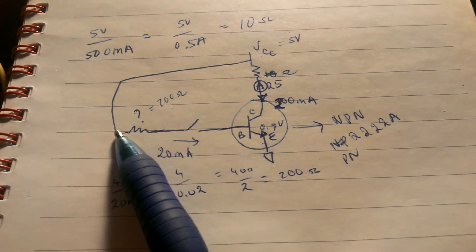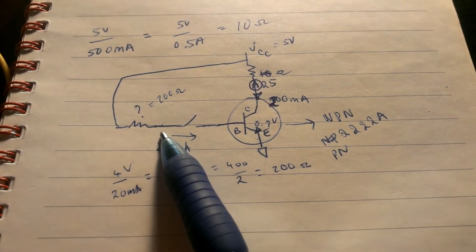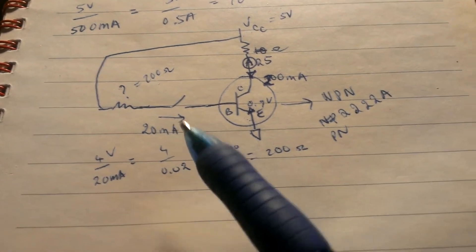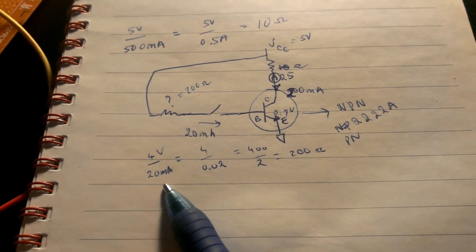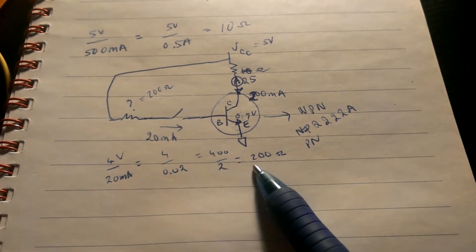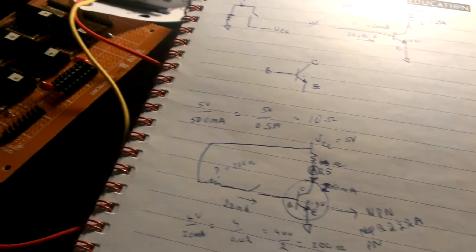So the voltage drop across the resistor is about 4.1 or about 4 volts, and I just use Ohm's law to calculate the resistor to be 200 ohm, and that will be the resistor right here. So that's the theory, now go to practice.